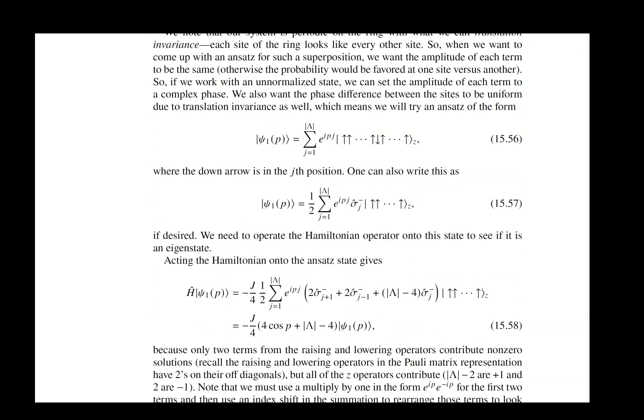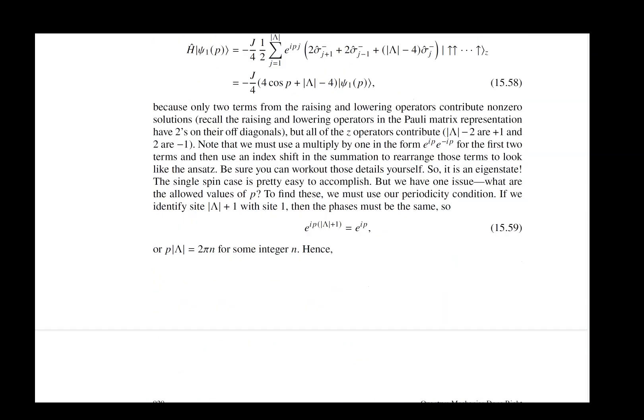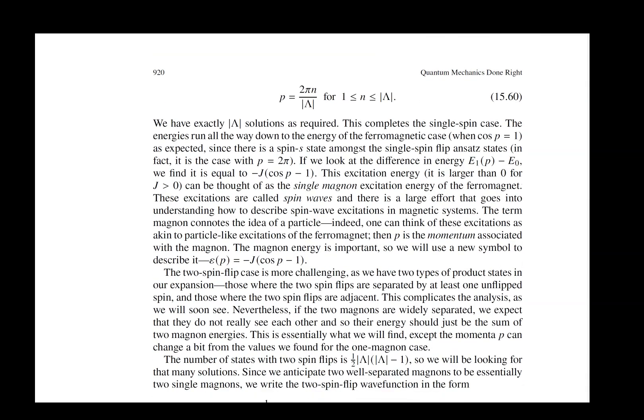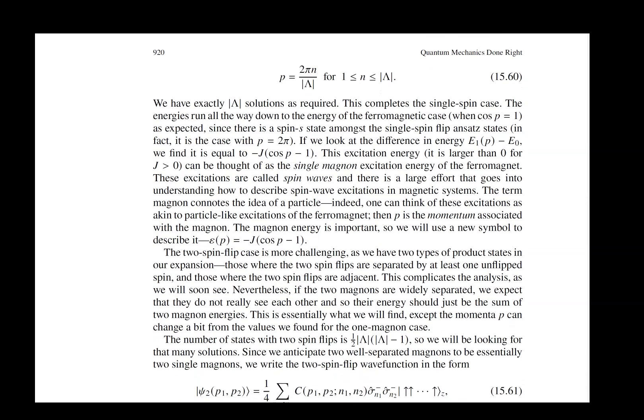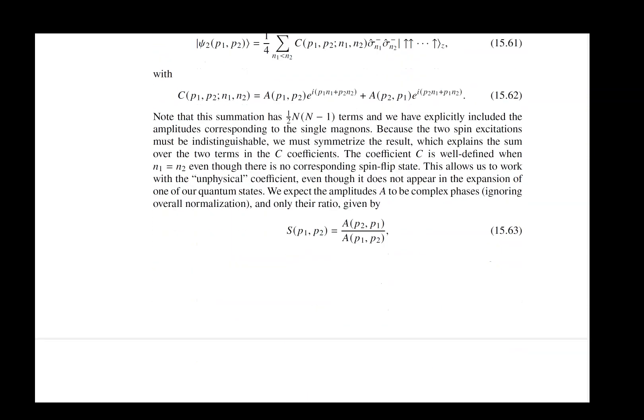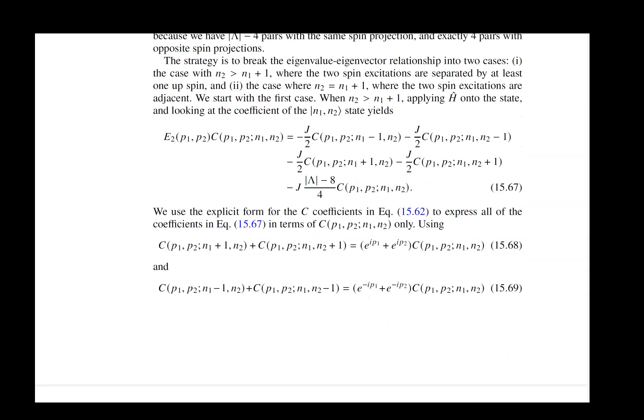And again, we start by looking at what happens when you have a single spin flip. That problem is relatively easy to solve using the ideas from the lattice that we had back when we were solving our initial spin models in chapter 10. But then we have to look at the case where we have two spin flips. And this gets complicated when the two spin flips are on neighboring sites because then they interact with each other through this Heisenberg exchange.